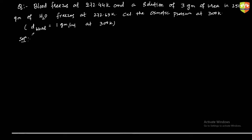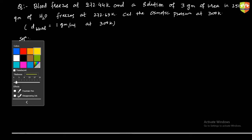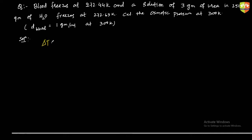Let me know if you're getting the concentration, otherwise I'll solve this. In this question, blood freezes at 272.44 Kelvin and a solution of 3 grams of urea in 250 grams of water is given. So ΔTf = Kf × m.